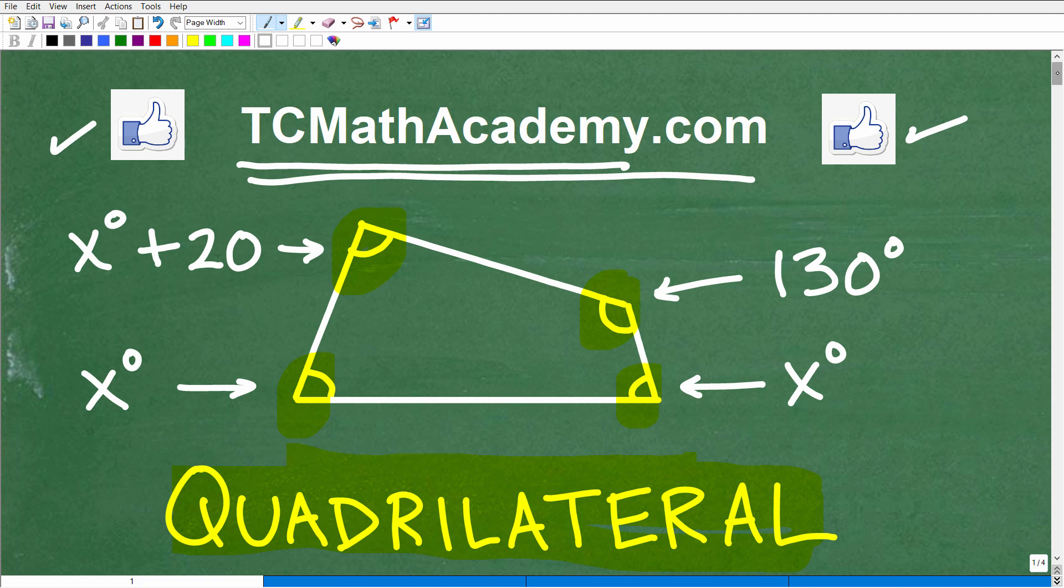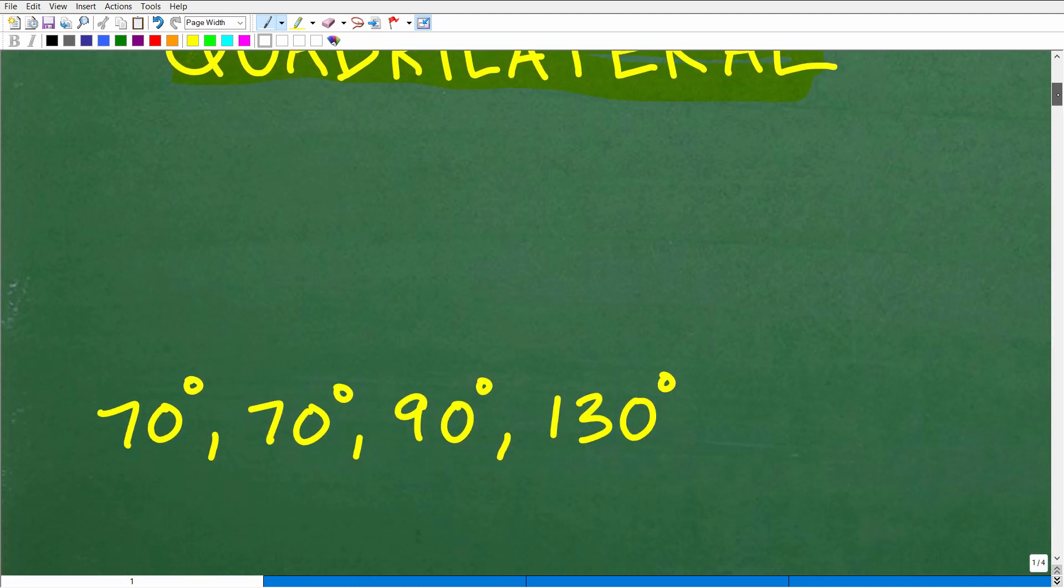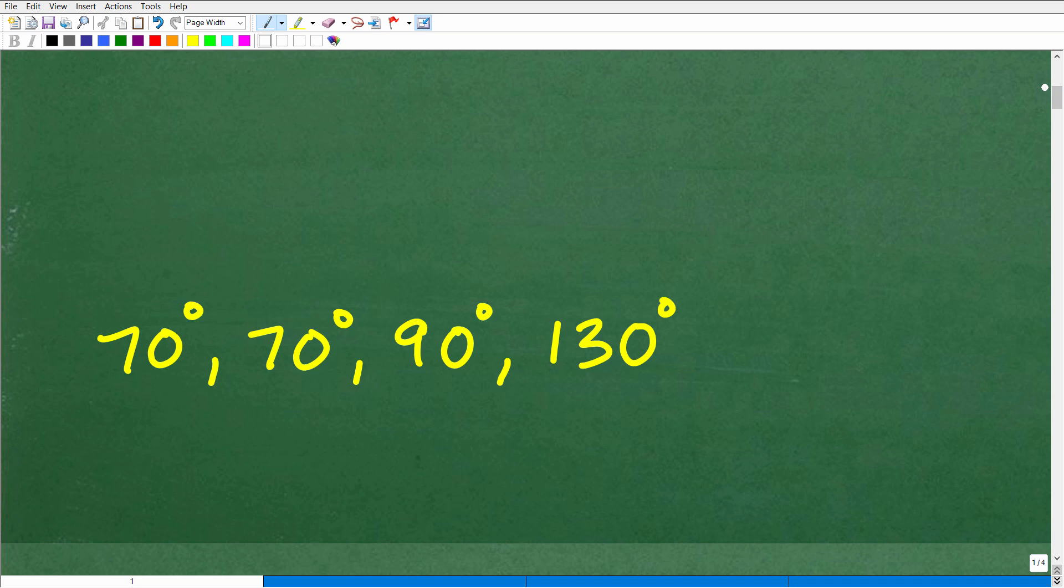Okay, so let's take a look at the answer. Again, we're looking for the angles of that quadrilateral, and the angles you should have found, if you do this correctly, are 70, 70, 90, and 130. And all of these are in degrees.